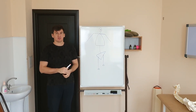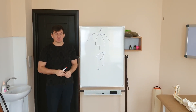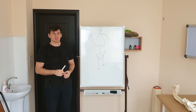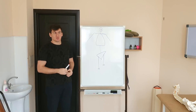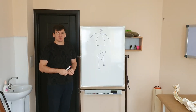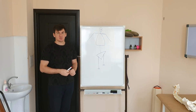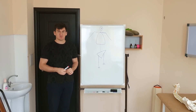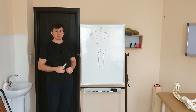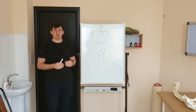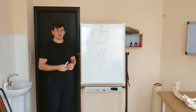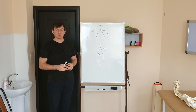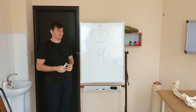Today, we'll talk about how scoliosis develops, the most common reasons why it occurs, how it progresses, how the positions of different parts of the body change, and the most common types of scoliosis.